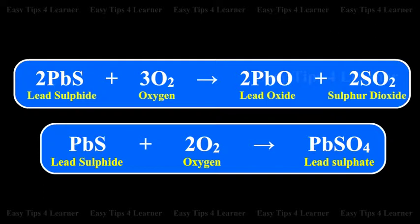PbS + O2 gives PbO + SO2. PbS + O2 gives PbSO4.